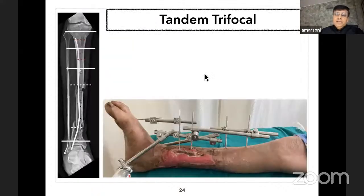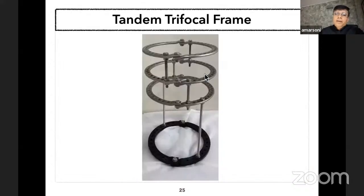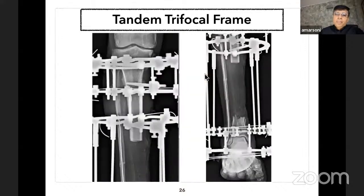This patient had an eccentric gap at the distal end with a large avascular bone segment. A tandem trifocal osteosynthesis was planned with proximal to distal transport. This is the post-fixation X-ray showing the large gap at the distal end.